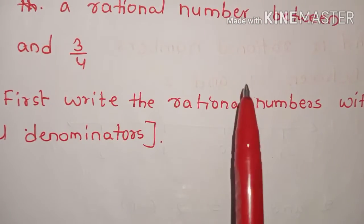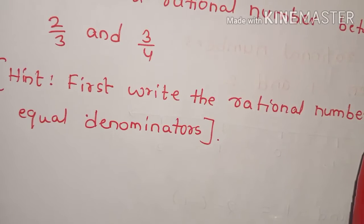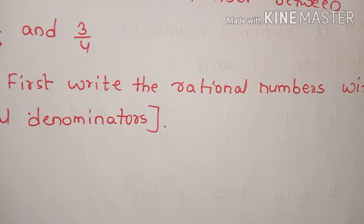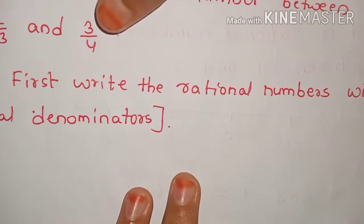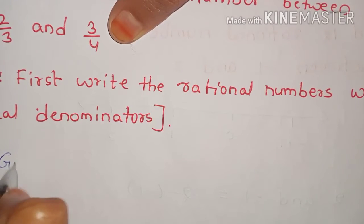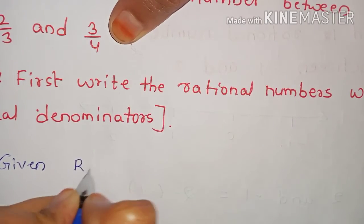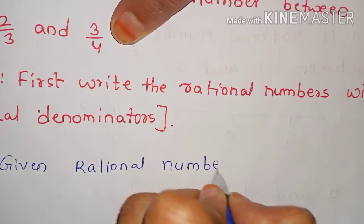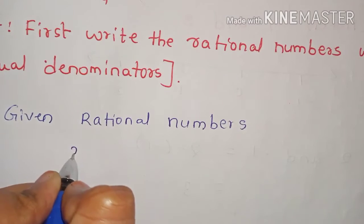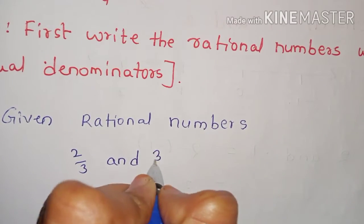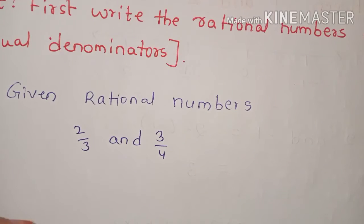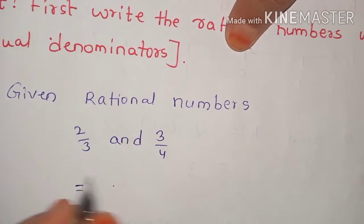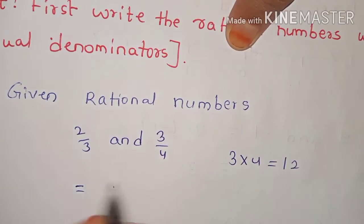First, write the rational numbers with equal denominators. The given rational numbers are 2 by 3 and 3 by 4. We make the denominator terms equal. Denominator equals 3 into 4 equals 12.